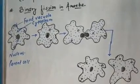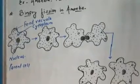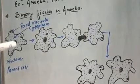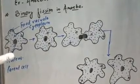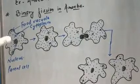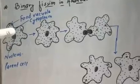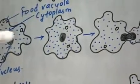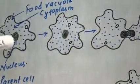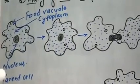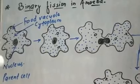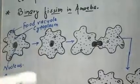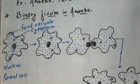Binary fission in Amoeba कैसे होता है? यहाँ पर यह जो Amoeba है, यह उसका nucleus है। यह जो body का projection निकला हुआ है, इसे हम लोग pseudopodia कहते हैं। यहाँ पर जो छोटे-छोटे zero-like structures हैं, इन्हें हम लोग food vacuole कहते हैं। पूरा अंदर का sap cytoplasm है और बीच में center में nucleus है। मान लीजिए कि यह Amoeba का एक parent cell है। उसमें धीरे-धीरे nucleus lengthen होना शुरू हो जाता है।